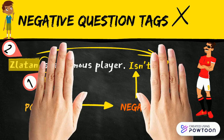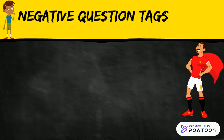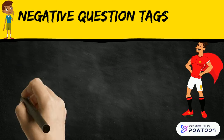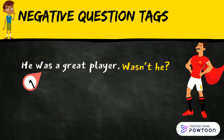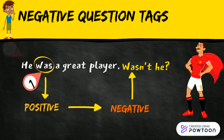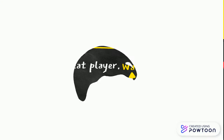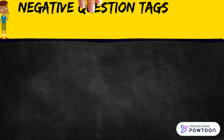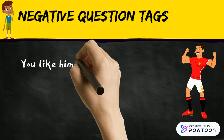Here is another example with the verb 'to be': 'He was a great player, wasn't he?' Remember, we again change the verb form 'was' from positive to negative — 'wasn't' — plus the subject pronoun 'he'.